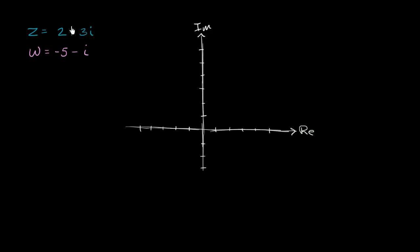The real part of z is 2, and then we have 3 times i, so the imaginary part is 3. We go right over here — this is 2 on the real axis and 3 on the imaginary axis — so 2 plus 3i, and that right there is z. Now let's plot w. w is negative 5 minus i, so negative 1 on the imaginary axis. That is w.